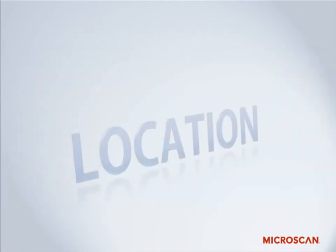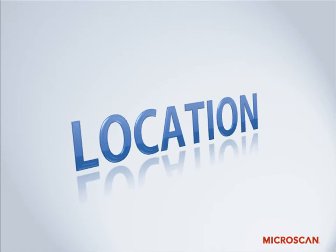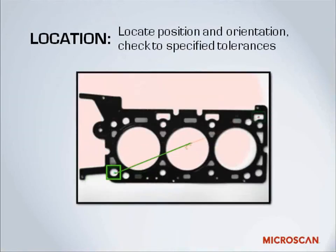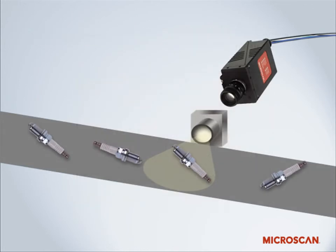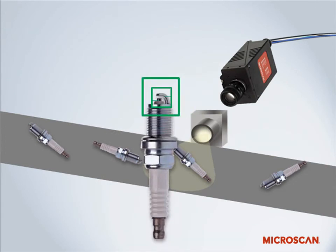Location is when machine vision is used to report the position and orientation of a part. We can locate the position and orientation and check that to a specified tolerance — in other words, looking at the part to make sure it's at the correct angle and using that as a reference point to verify proper assembly. You can also use this for alignment to other machine vision tools. Your parts may be facing all different directions as they go down your production line, and you can locate a part, straighten the image, and then run other machine vision processing tools on it.